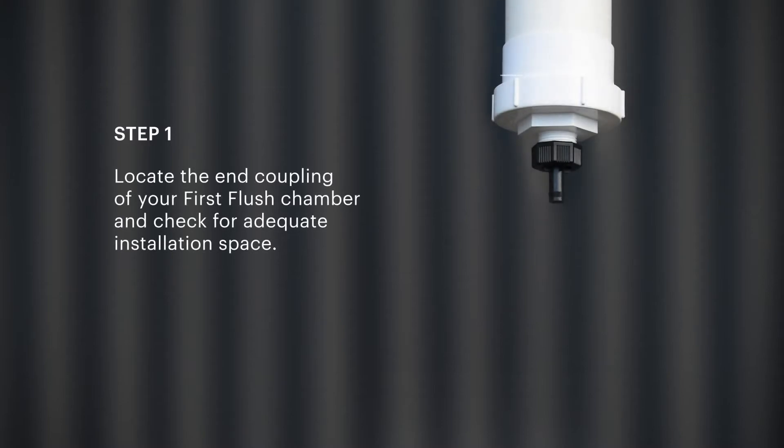Locate your existing first flush diversion chamber and before removing the screw cap, check that the advance release valve will have sufficient clearance for installation. The valve must also be accessible for maintenance and inspection.